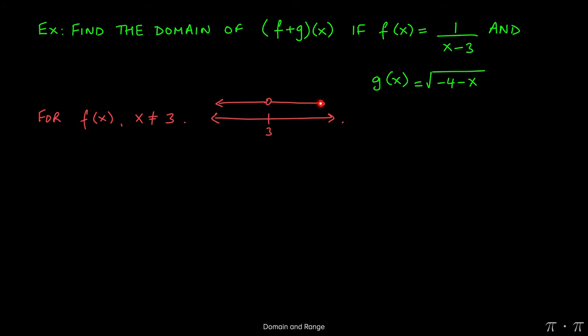Similarly, any number to the right of 3 is not going to cause us any issues either, so I can plug those numbers in as well. This gives us a domain of negative infinity to positive 3, union 3 to positive infinity. We're using parentheses around the 3 because that number is excluded from the domain.